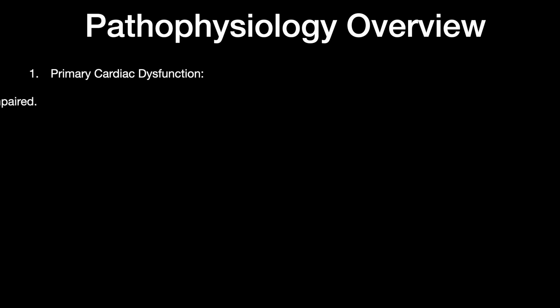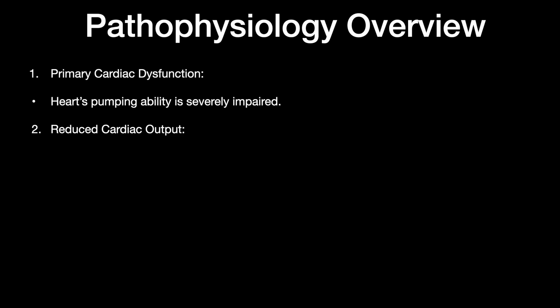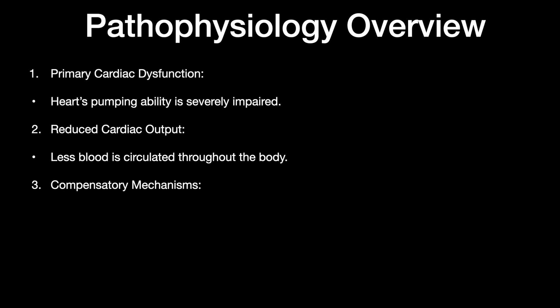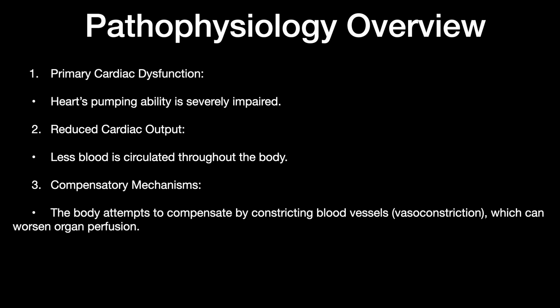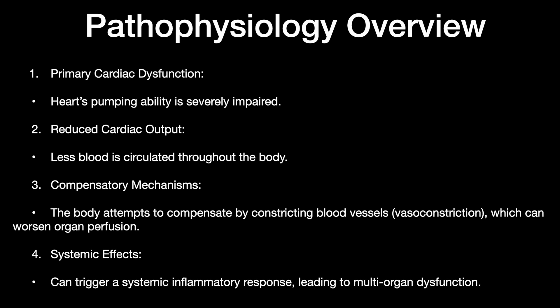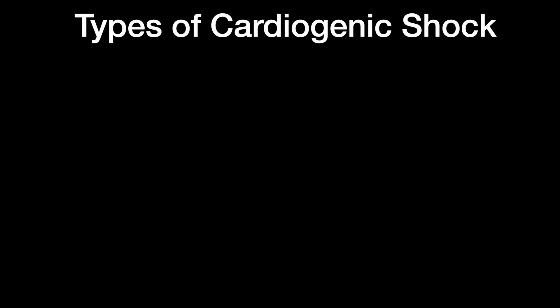In the pathophysiology overview, primary cardiac dysfunction reduces the heart's pumping ability, which in turn reduces cardiac output — less blood is circulating throughout the body. The body then attempts to compensate by constricting the blood vessels, which can worsen organ dysfunction. Finally, this triggers a systemic inflammatory response leading to multi-organ failure.